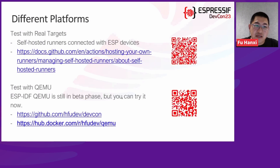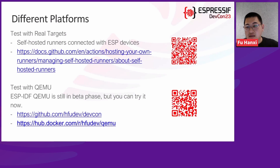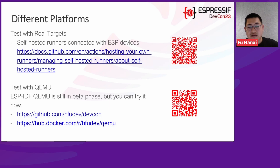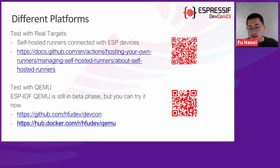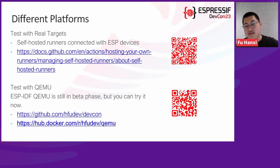On GitHub Actions, we can test with real targets and with QEMU. For real targets, GitHub supports self-hosted runners connected with ESP devices. If you have free Raspberry Pis, you can connect them with ESP devices and follow the link that guides you on how to add your Raspberry Pi as a GitHub runner. In this demo, we will show how to test with QEMU, which is much simpler. If your project is open source, it's totally free. The ESP-IDF QEMU is still in beta phase, but you can try it right now. I've linked a repo with the QEMU Dockerfile, today's slides, and a QR code.